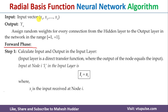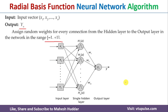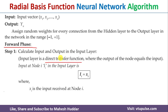In radial basis function, we don't do anything at the input layer — a direct transfer function is used. Whatever the input xi is, that is assigned to ii, meaning the output of each input layer neuron is the same as its input. For example, if the input is zero, the output is also zero; if the input is one, the output is one, and so on.